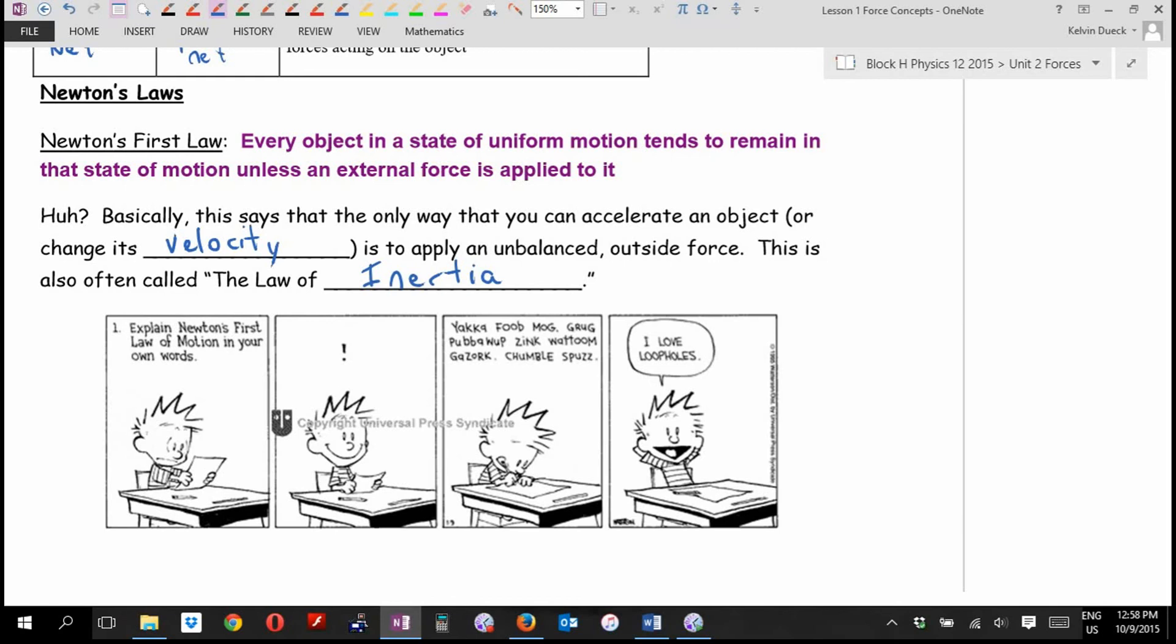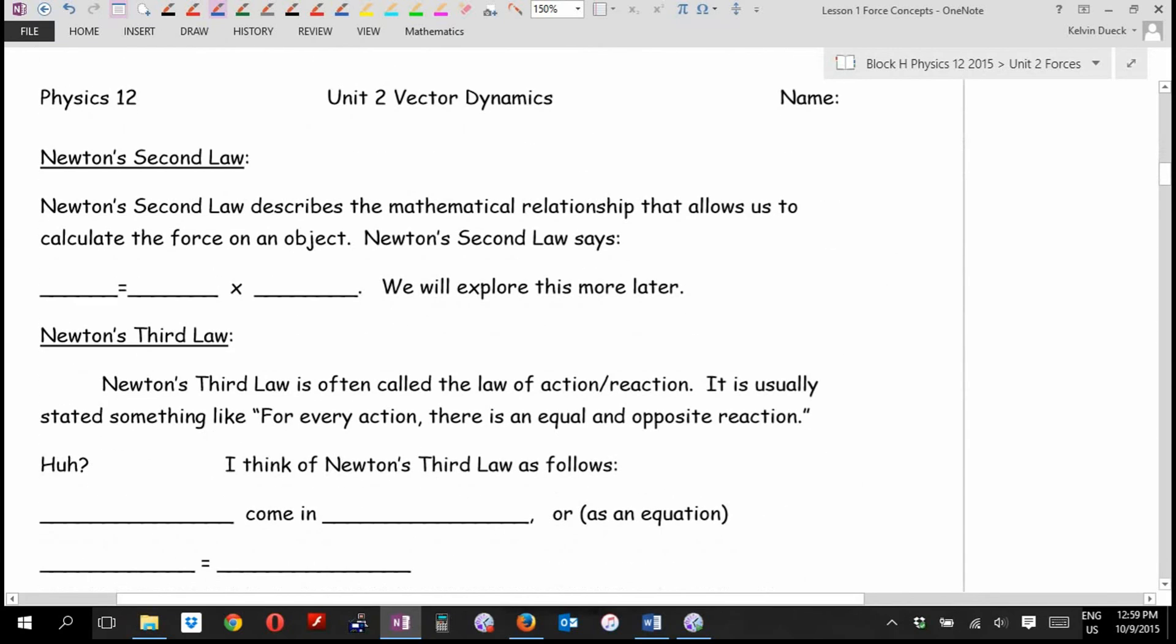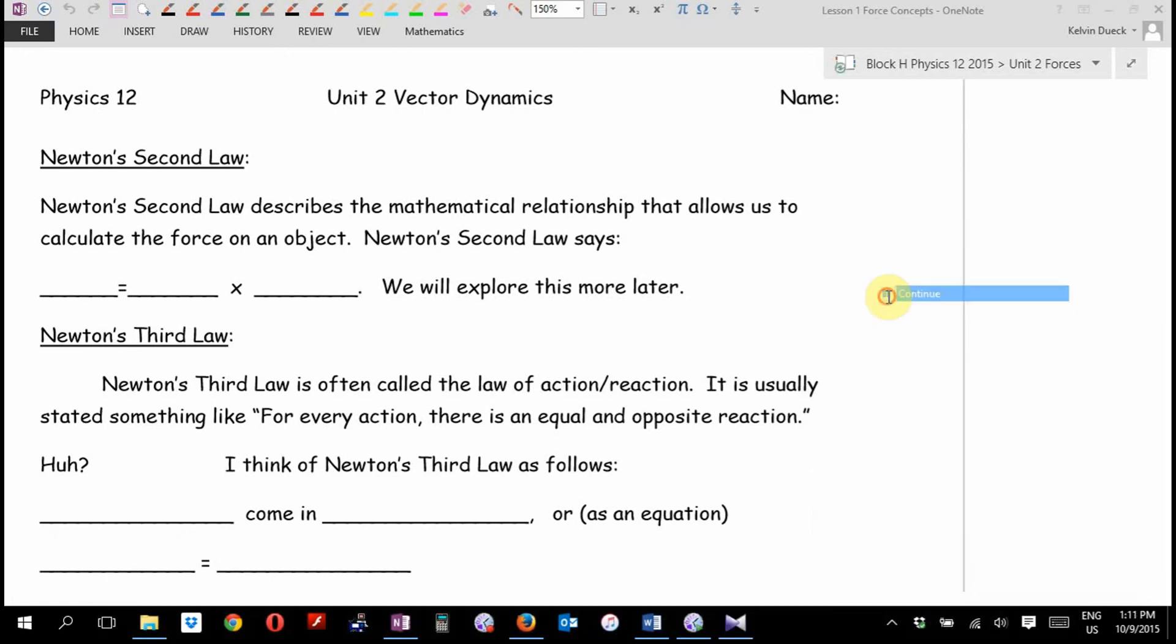A little Calvin and Hobbes. It says, Explain Newton's first law of motion in your own words. Calvin looks terrified. Then he has his brain wave. He says, Yakka, Fub, Mog, Grug, Pub-a-wump, Zink, Wat-toom, Gazork, Chambul-Spuzz, which is Newton's first law in his own words, but don't try that on a test. I won't give you marks for that. Newton's first law. The law of inertia.